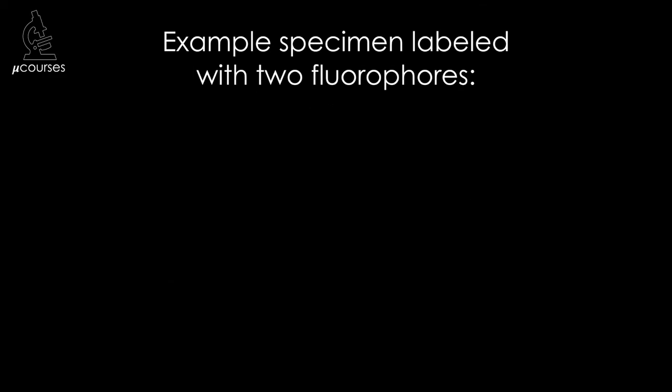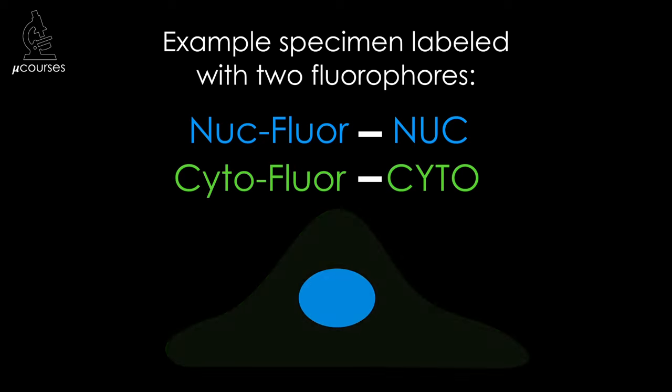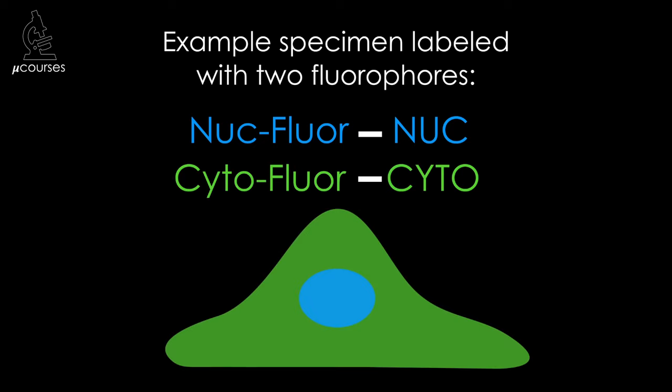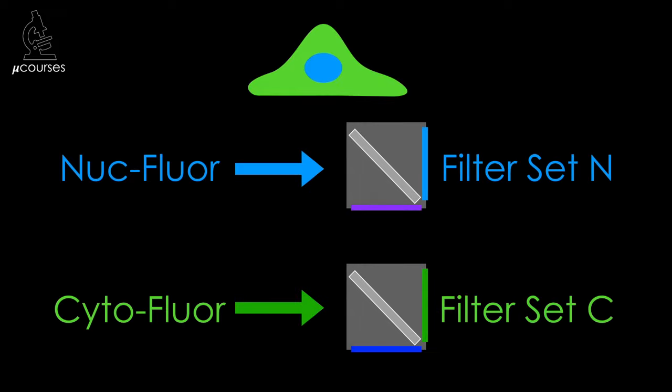Throughout this microcourse, I'll use a specimen labeled with two fluorophores as an example. The names of these hypothetical fluorophores are nuqueflor, which binds to nuque and localizes to the nucleus, and cytoflor, which binds to cyto and localizes to the cytoplasm. To image these fluorophores, we're going to use two different filter sets: filter set N to image nuqueflor, and filter set C to image cytoflor.